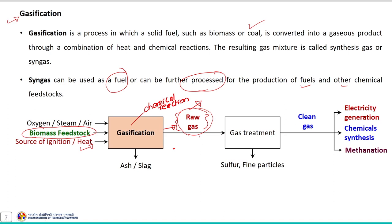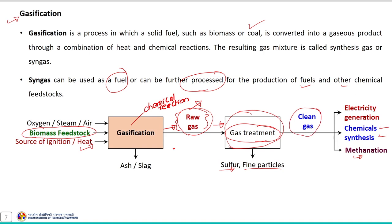When the gas is used for the production of fuels and chemicals, more precise cleaning and conditioning of the gas is necessary. For that purpose, a gas treatment unit is used in the gasification process to remove fine particles and sulphur present in the raw gas, so that the clean gas can be used for the production of fuels and chemicals.